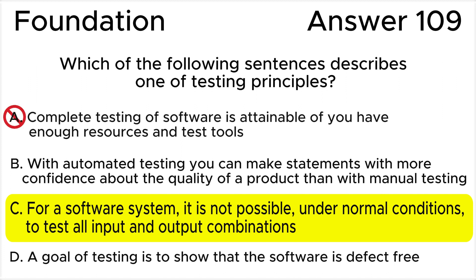The exhaustive testing impossibility principle suggests that complete testing is not attainable even with unlimited resources and test tools. There will always be constraints and it is not feasible to test everything. Answer B is wrong because this statement is not a testing principle but more of a comparison between automated and manual testing.